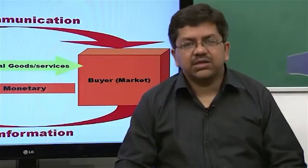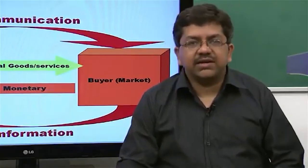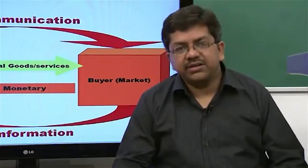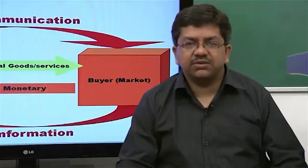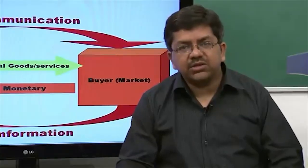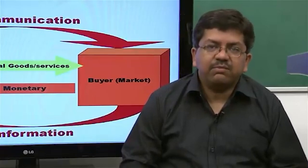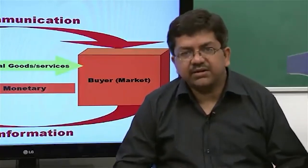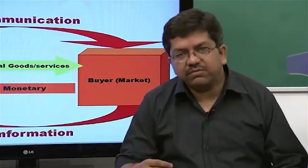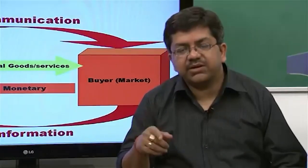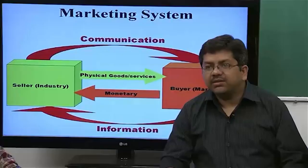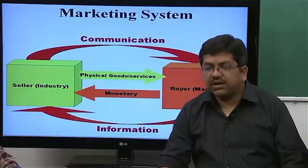What is exchanged includes physical goods or services, and what the seller gets in return is monetary benefits. The seller also provides communication about the products and services to the market. What comes back from the buyers to the seller in that loop is information, which is very important for the seller to remain relevant to the market. This information flow back from buyer to seller is a very important part — this is where we finished in the last class.